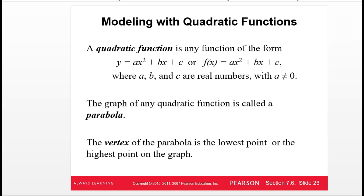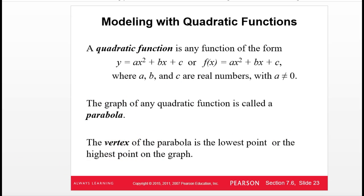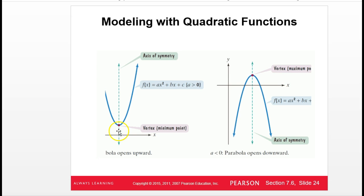Lastly, quadratics. The quadratic function is a little bit more than a linear — linear was mx + b, and we add a square term to that. The square term cannot go away or we'd just be back to linear. A quadratic function has a square term as the highest power, and its graph is called a parabola — those u-shaped graphs. The highest or lowest point on the graph is called the vertex.